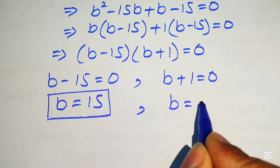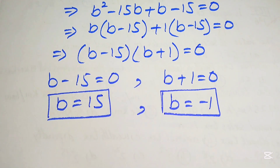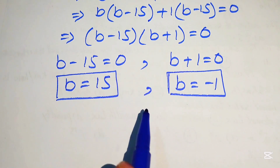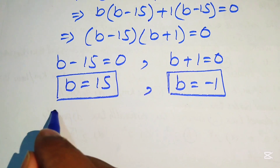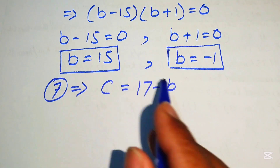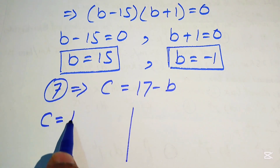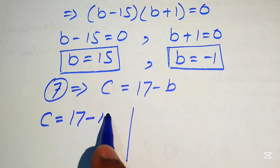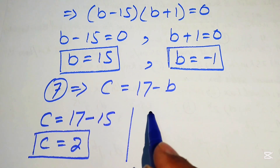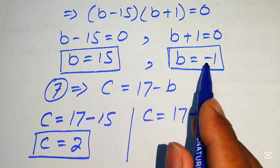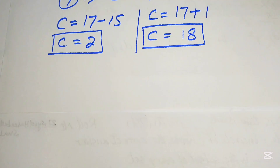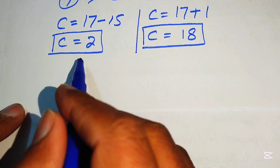This gives two cases: B minus 15 equals 0, so B equals 15; and B plus 1 equals 0, so B equals minus 1. Using equation 7, C equals 17 minus B: substituting B equals 15 gives C equals 2, and substituting B equals minus 1 gives C equals 17 plus 1 equals 18.